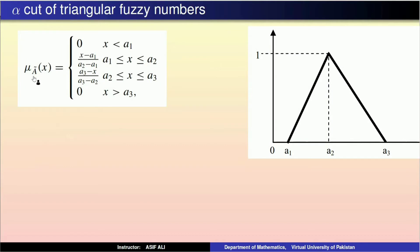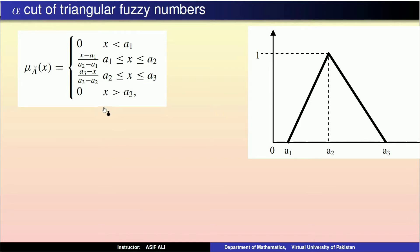Dear students, ہمارے پاس ایک triangular fuzzy number ہے جس کا membership function mu_Ã(x) ہے: 0 when x < a1; (x − a1)/(a2 − a1) when a1 ≤ x ≤ a2; (a3 − x)/(a3 − a2) when a2 ≤ x ≤ a3; and 0 when x > a3. اس کا ہم alpha cut find کریں گے۔